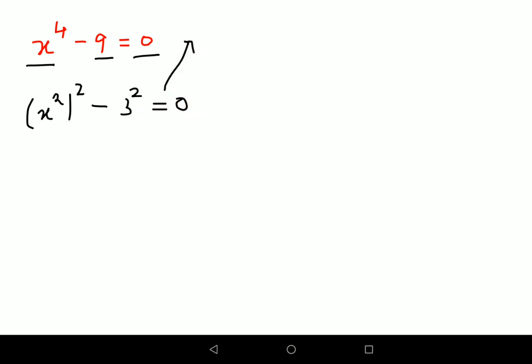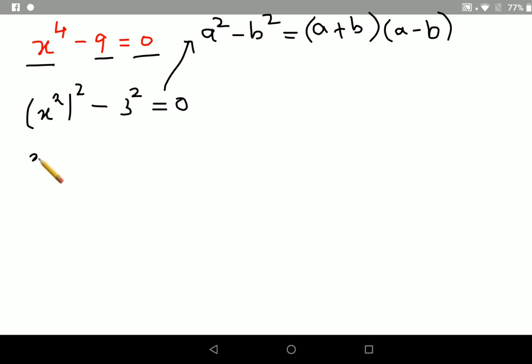So basically we are writing this in the form of identity a square minus b square, which can factorize as a plus b and a minus b. So here I can write this as x square minus 3 and x square plus 3 equals to 0.